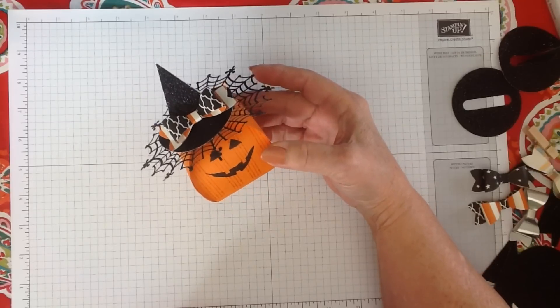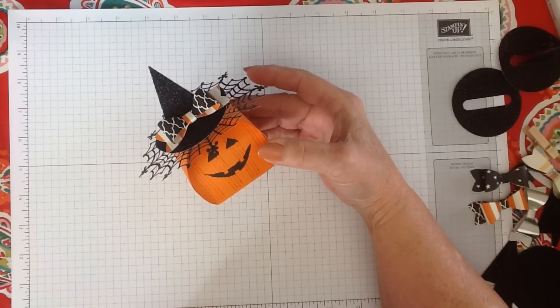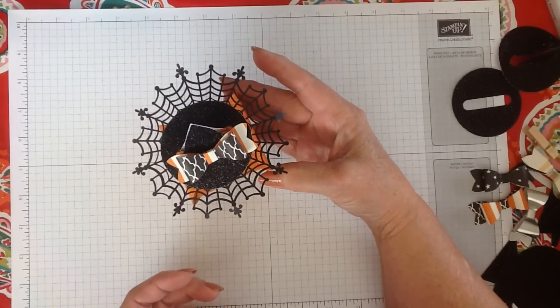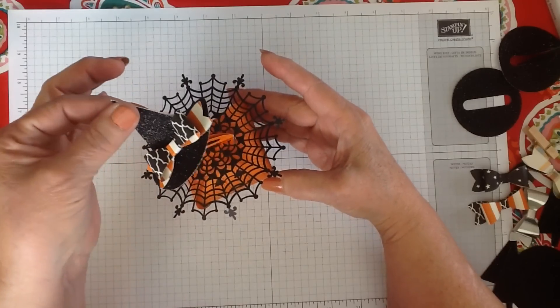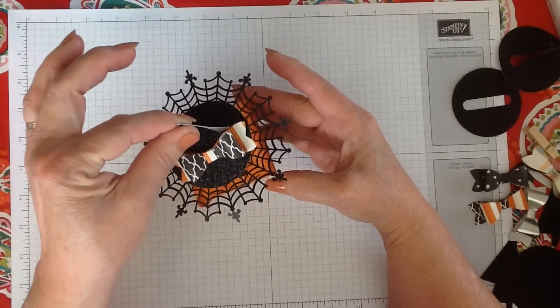Here's our little curvy keepsake pumpkin with the little spider web on top and the little hat on it. I'm going to show you how to make this cute little hat.